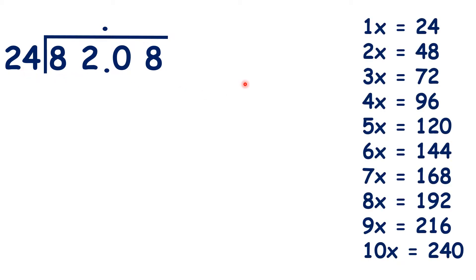So we need our 24 times table, and we can start by dividing 82 by 24. We can see that 3 times 24 is 72, so we can write 72 below the 82 and write a 3 in our answer.